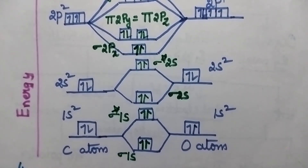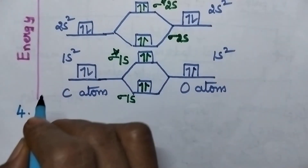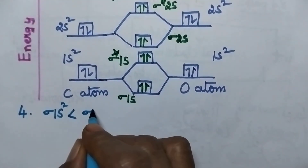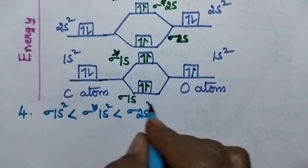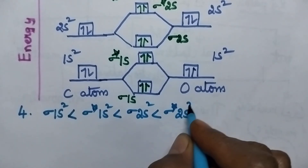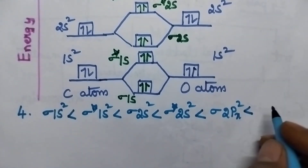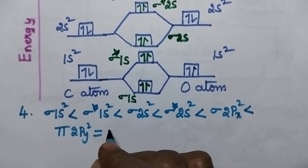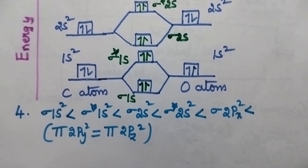Let us write the electronic configuration of CO molecule: sigma 1s2, sigma star 1s2, sigma 2s2, sigma star 2s2, sigma 2px2, pi 2py2 having the same energy as pi 2pz2. This is the electronic configuration of CO molecule.